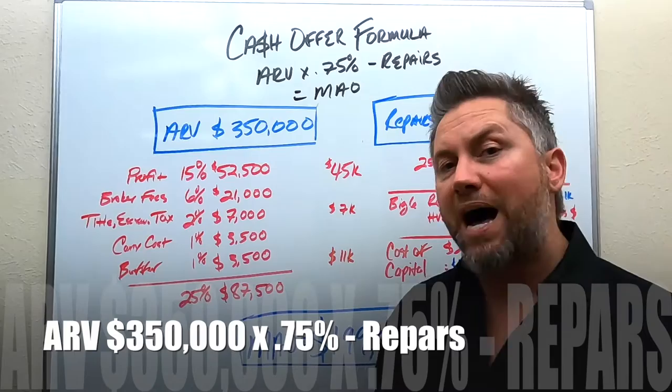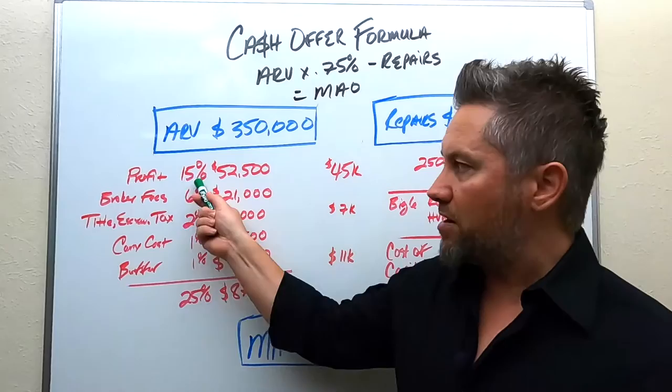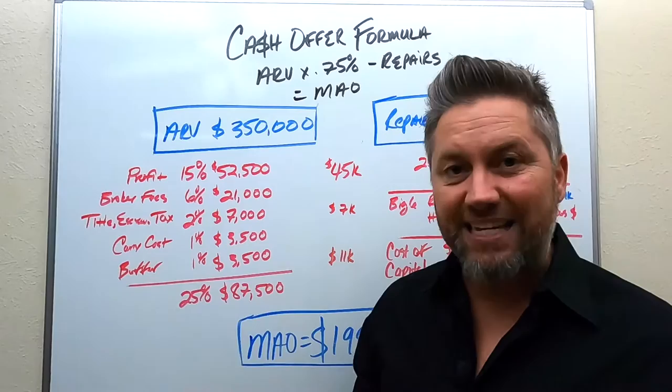I like to run a calculation of ARV times 75% minus the cost of repairs. That 75% is just a basis to start — you want to make sure you know exactly where that 25% is going. We always try to run our numbers on a 15% net profit. You have to target somewhere; you have to have a basis to start. So 15% is what we're trying to net after expenses on this particular deal.